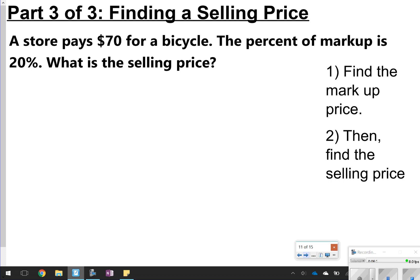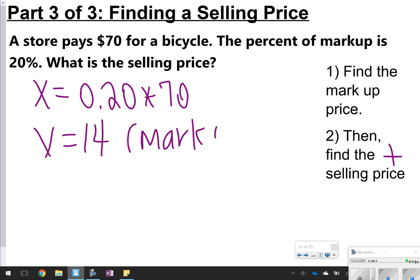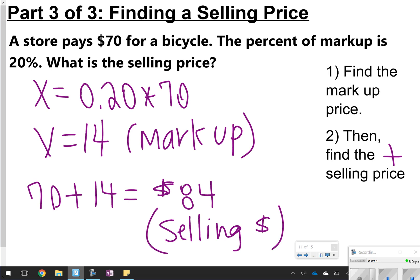A store pays $70 to get a bicycle and the percent of the markup is 20%. So what is the selling price? You're essentially doing the same thing that you started off doing to find a discount, except instead of subtracting the money amount that you get from this, you're actually going to add it back. So you're going to find out the markup price and then find the selling price by adding. An easy way to do this again, you could just use the percent equation. So I'm going to do 20% of $70. So 20% times 70 or 0.20 times 70. And that gives me 14. So that means 14 is the markup. So to find the selling price, I would take 70 and add 14 to it to get 84. Or this would be what you're going to be selling it at, the selling price.